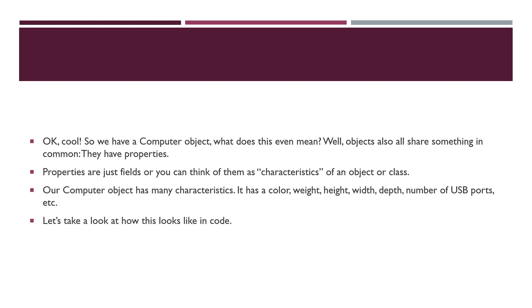Objects in code, likewise in real life, share something in common — they have properties. For example, if you're dealing with a user object, they have a name, an email address, an age, the date they joined, whether or not they're verified. Likewise in real life, if we look at a desk, a desk has certain properties: a color, a height, a width, a depth, a weight — so many different things.